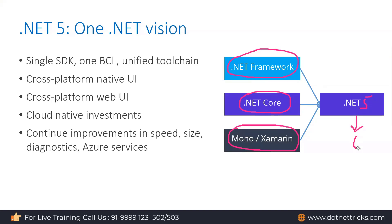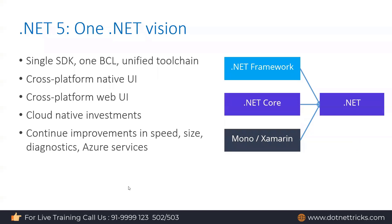Similarly, we'll have .NET 6 and then .NET 7. Starting from .NET 5, we have a unified .NET version capable of building any type of application. Instead of maintaining three different versions of .NET, we now have only one version that does everything.